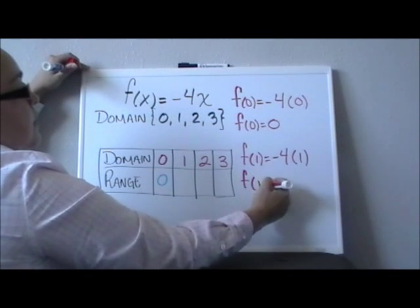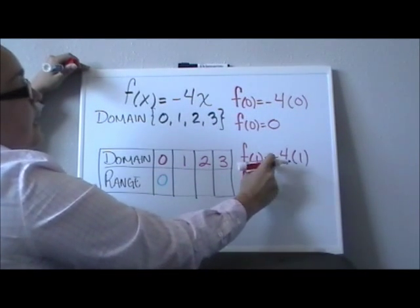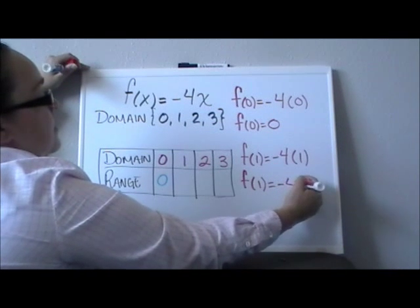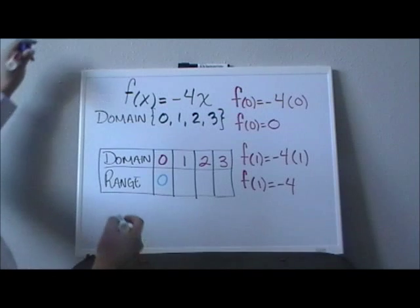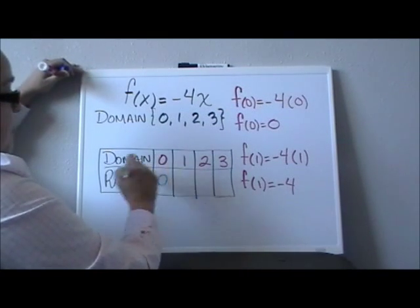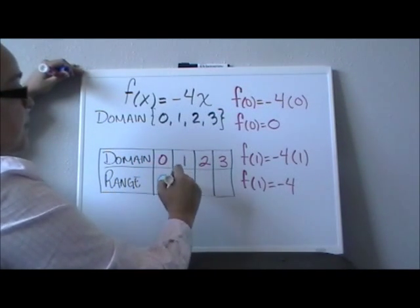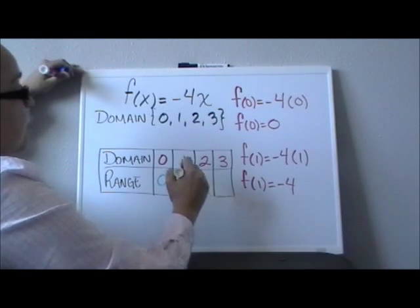So f of 1 equals negative 4 times 1, negative 4. So for my domain 1, when my x is 1, the value for my range will be negative 4.